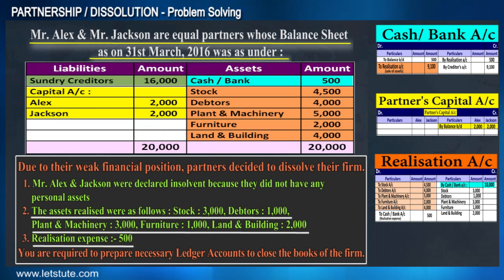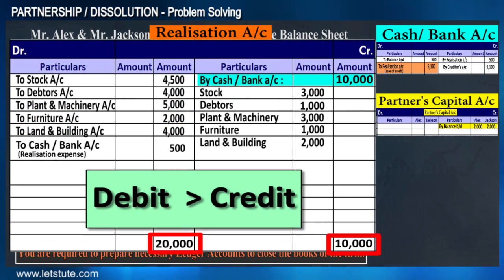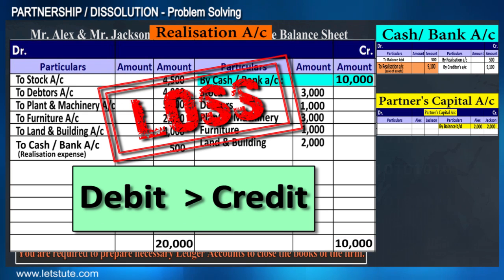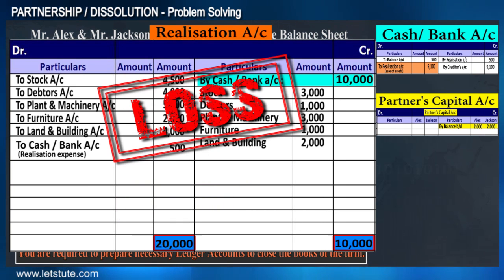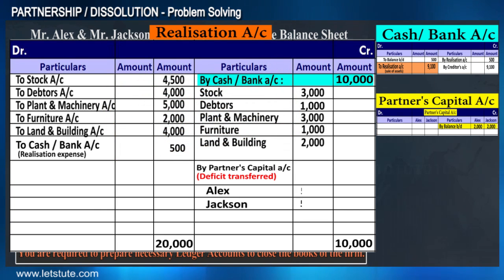Now for Step 5: starting with the realization account, the debit is more than credit, which means there is a loss. This loss will be divided among the partners and transferred to the partners' capital account.